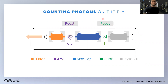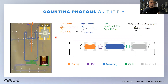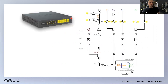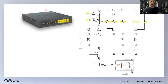This is the device hooked up in the fridge with all the control lines. All the yellow lines are connected to the OPX — both inputs and outputs of the experiment. The entire experiment is orchestrated from the OPX, our Universal Quantum Controller. Everything is programmed in QUA.